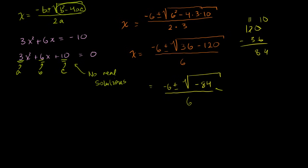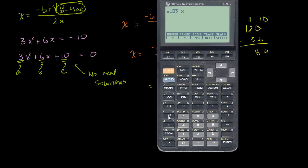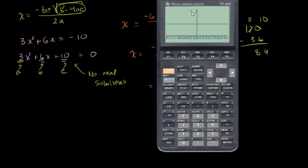Let's verify that for ourselves with a graphing calculator. Let's graph y = 3x² + 6x + 10 and see where it intersects the x-axis. Notice this thing just comes down and then goes back up — its vertex is sitting above the x-axis and it's upward opening. It never intersects the x-axis, so at no point will this function equal 0. So once again, the quadratic formula seems to be working.